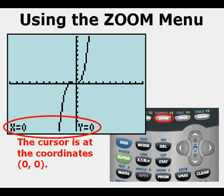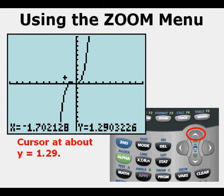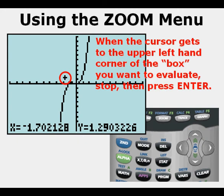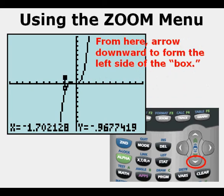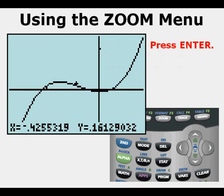The cursor is at the origin, whose coordinates are 0, 0 — just a small dot of a cursor. We're going to construct our box by moving the cursor to the left — eight strokes of the arrow — so the x-coordinate is at about negative 1.7. Now moving the cursor up by arrowing up four strokes, we get y equals about 1.29. When the cursor reaches the upper left-hand corner of the box we want to evaluate, mark that corner by pressing Enter. Then press the down arrow a few times to establish the left side of the box. After establishing the lower left corner, do not press Enter, but arrow to the right until we reach the lower right corner of the box. Press Enter. This is the graph zoomed in to the dimensions established by the box we created.